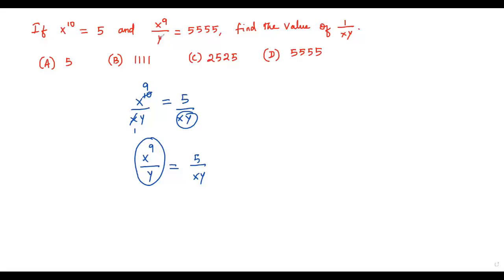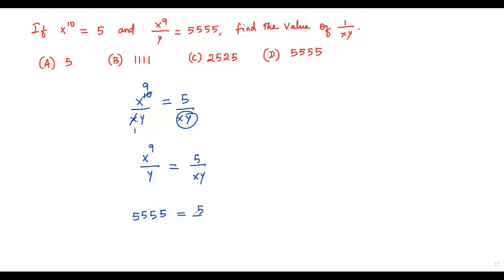On the left side we have x^9/y, and we already know that expression equals 5555. So we substitute: 5555 equals 5 over xy.